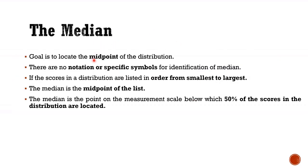Next we will talk about the median. The goal is to locate the midpoint of the distribution. There are no notation or specific symbols for identification of the median. First we have to list in order from smallest to largest. Then the midpoint of the list is the median. The median is a point on the measurement scale below which 50% of the scores in the distribution are located.